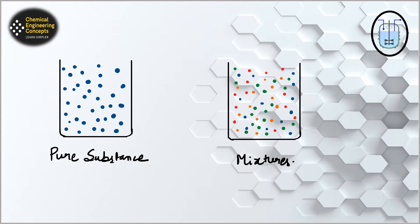Suppose we have a pure substance — if it is pure water, then water molecules will be surrounded by water molecules only. So the interaction will be among water molecules only. But in mixtures, we are going to have many different species. If water is in a mixture, the interaction of water molecules will not just be with water molecules but with other molecules too — it could be ethanol, methanol, anything.